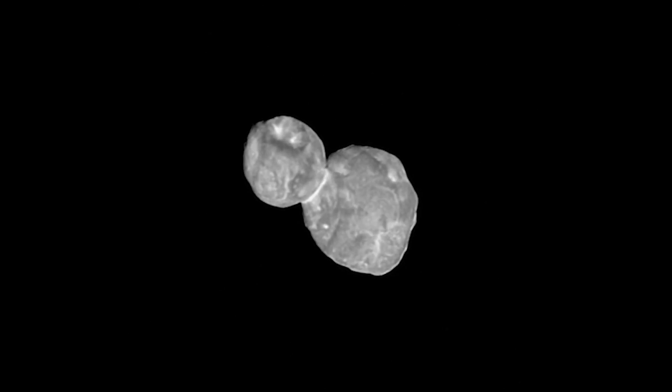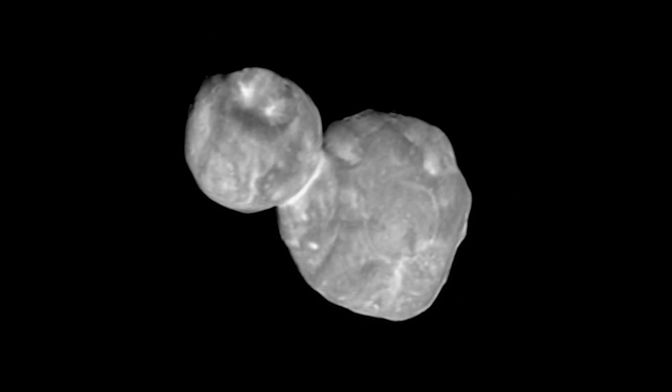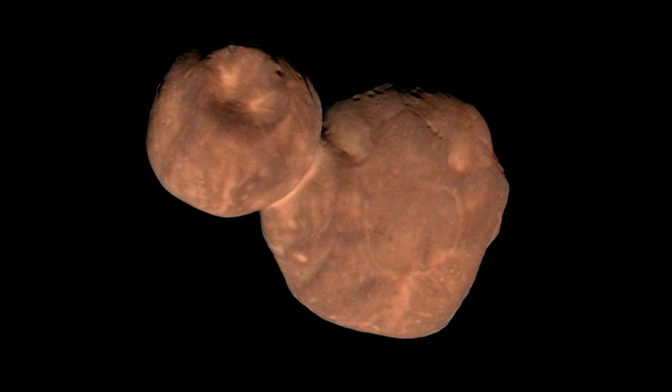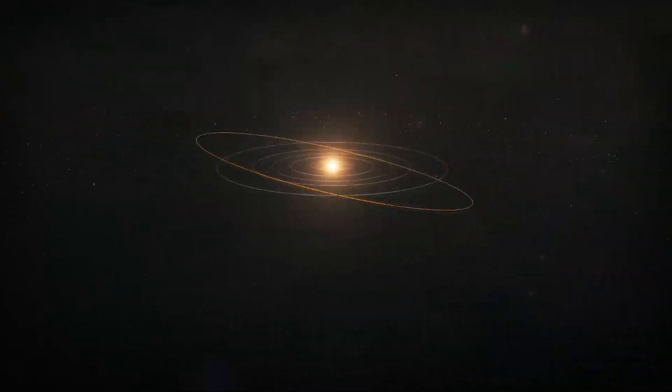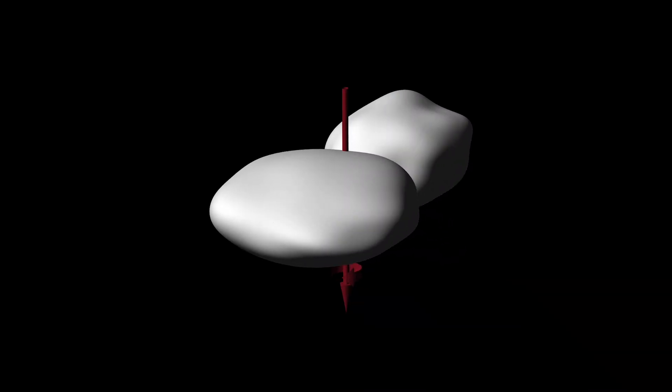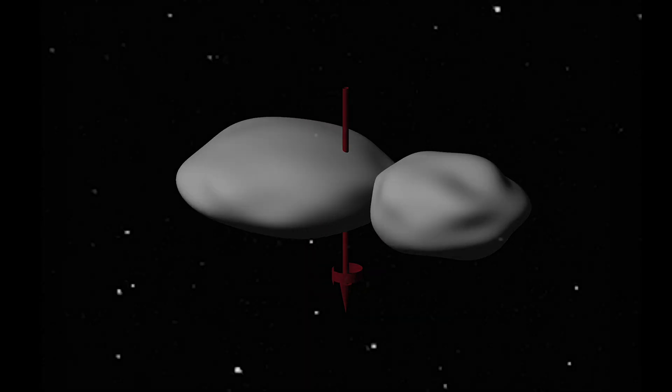The Kuiper Belt Object 2014 MU69, now officially named Arrokoth, is the farthest object ever explored by a spacecraft. It's a billion miles beyond Pluto and over 4 billion miles from the Sun. It turns out that this so-called contact binary object billions of miles away is a really big deal.